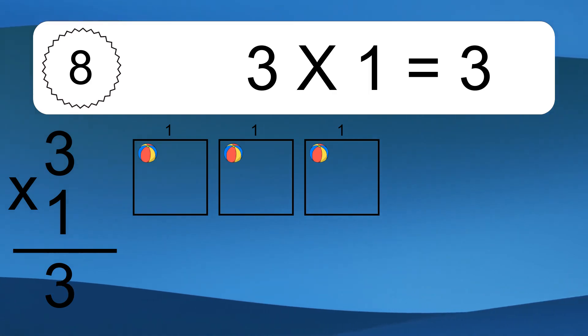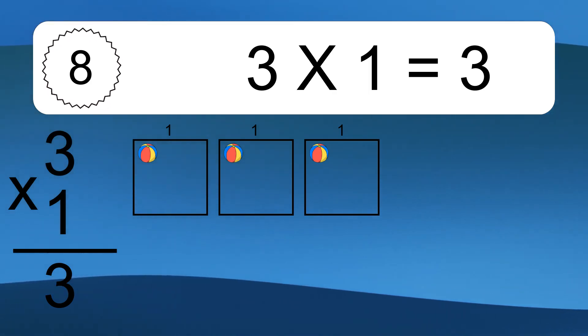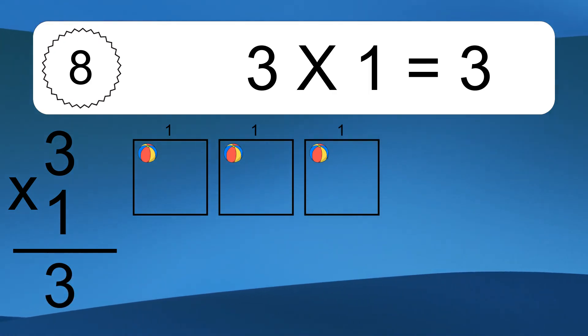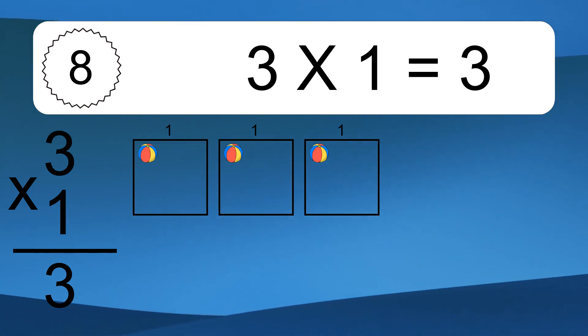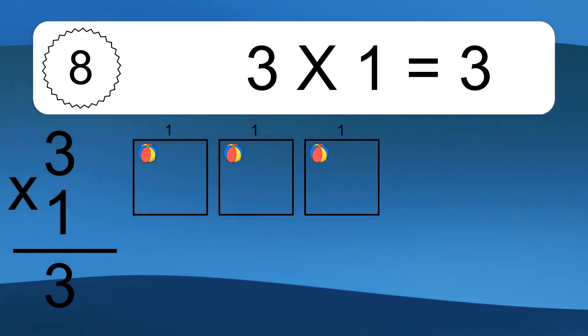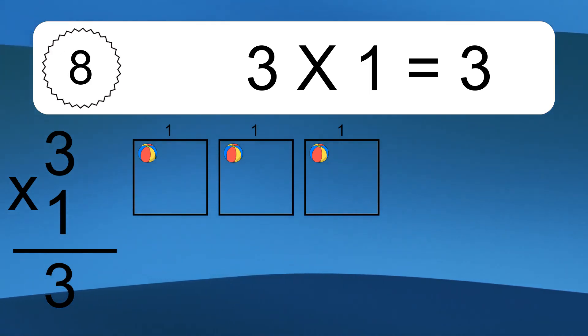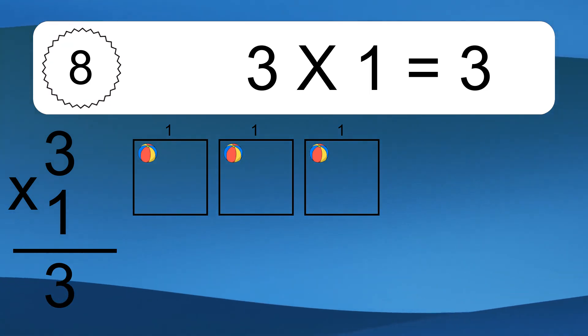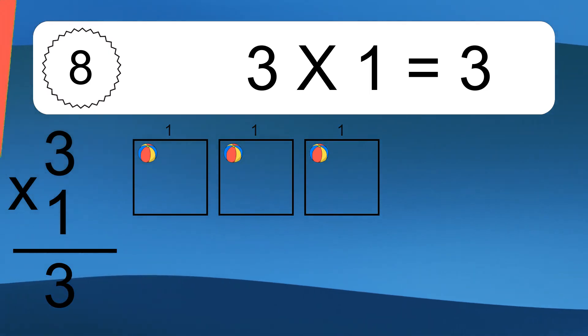We have three boxes, and each box has one colorful ball inside. If you count all the balls in all the boxes together, you will have 3 times 1 balls. This equals 3 balls.